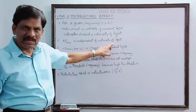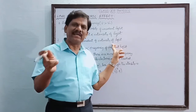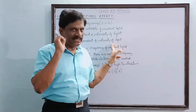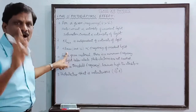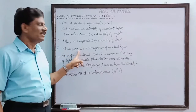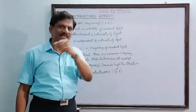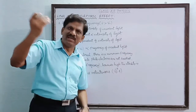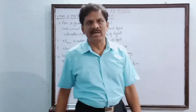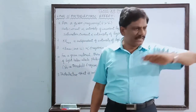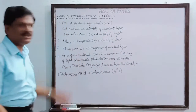The third law: the maximum kinetic energy and the stopping potential are proportional to the frequency of the incident light. When the incident frequency is high, naturally the kinetic energy of the photoelectrons will be high, and the work done to stop them — the stopping potential — will also be high.